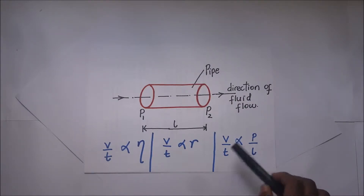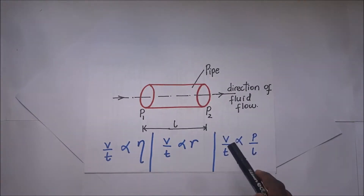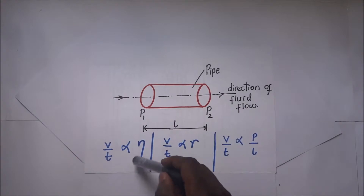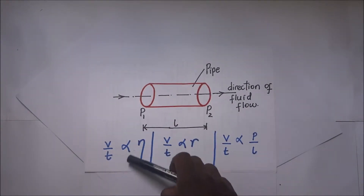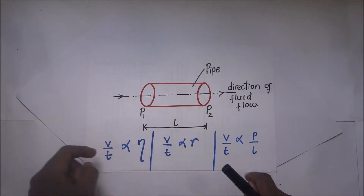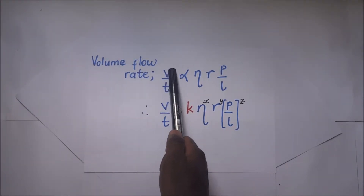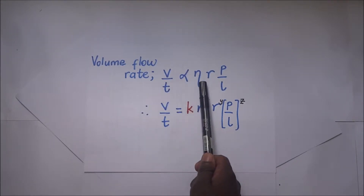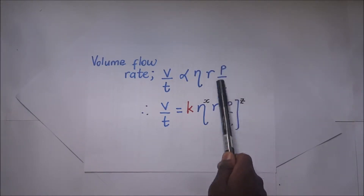So when we are talking about steady flow of a liquid through a tube, according to Poiseuille's formula, this steady flow is affected by these three factors: the radius, the pressure gradient, and the viscosity. Combining these three gives us that the volume flow rate is directly proportional to the coefficient of viscosity, the radius of the pipe, and the pressure gradient.